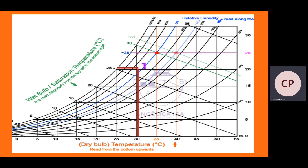Now we find the dew point temperature at point 1. From point 1 on the chart — at 30°C dry bulb and 75% relative humidity — we extend a horizontal line to the saturation (wet bulb) temperature scale on the inclined axis. The value read is 25.2°C, which is the dew point temperature at point 1.